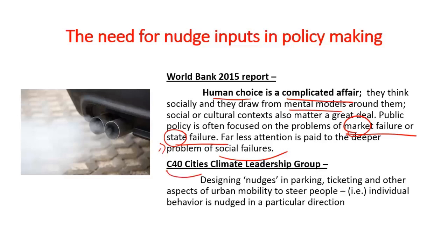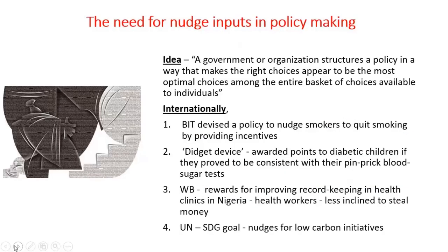In order to curtail the menace of pollution in global cities, a new initiative — the C40 Cities Climate Leadership Group — has been working on this issue. They have proposed nudges in parking, ticketing, and other aspects of urban mobility, such as increasing parking fees, reducing public transport fares, and increasing road tax. These nudges steer people to make use of public transport rather than relying on their own vehicles, thereby cutting down vehicular emissions.